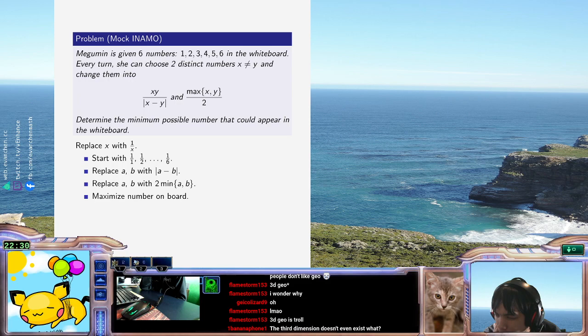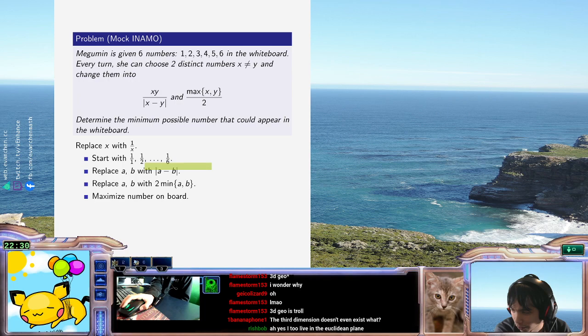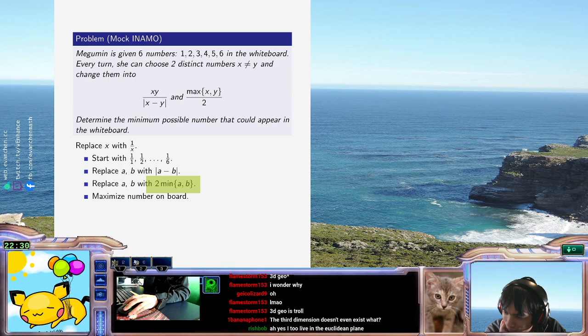When we do this, what are the new operations? The second thing is replace a, b with a minus b. The other thing is replace a, b with 2 times min(a, b). And this time I want to maximize number on board.